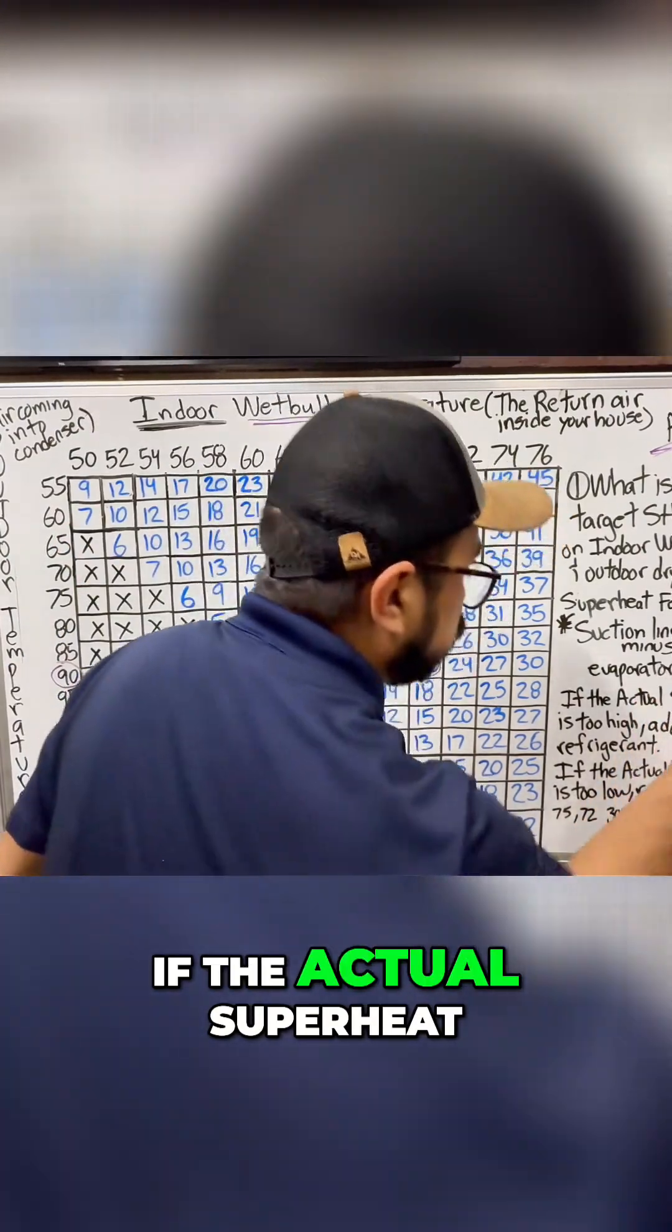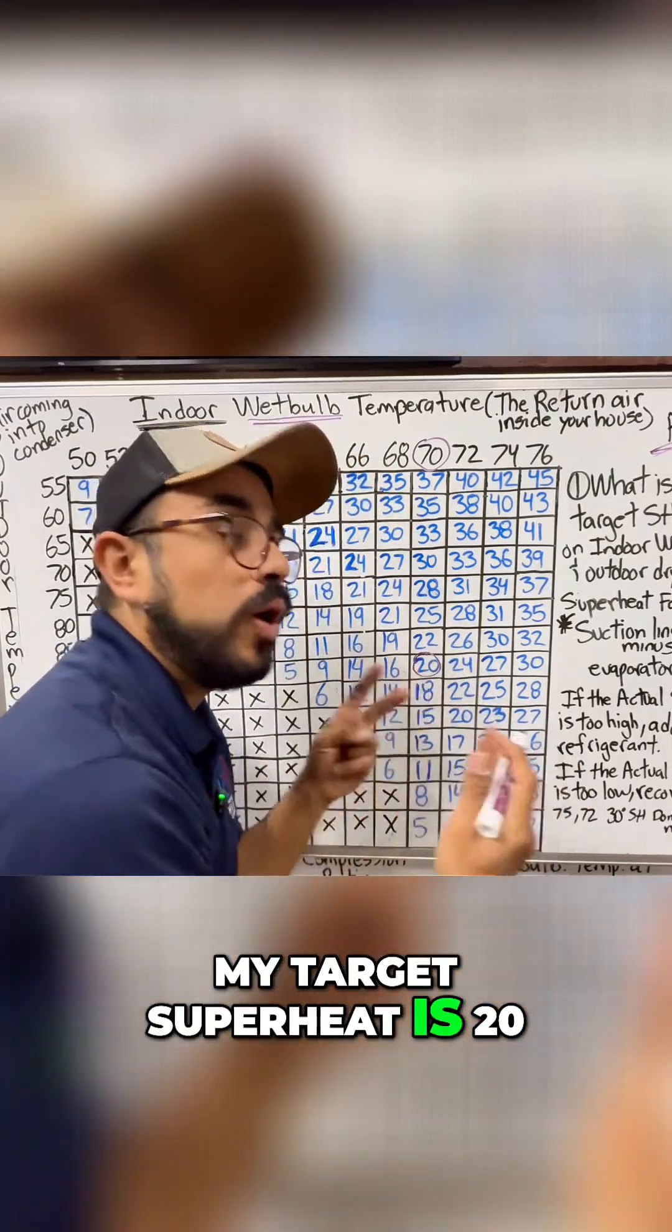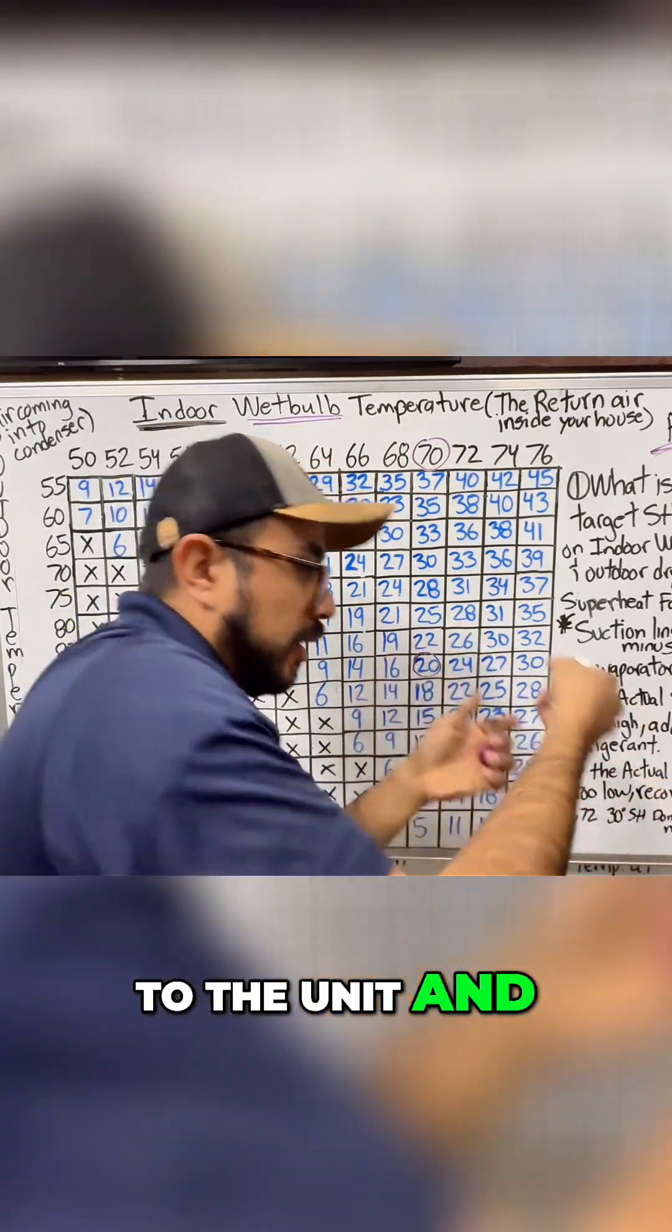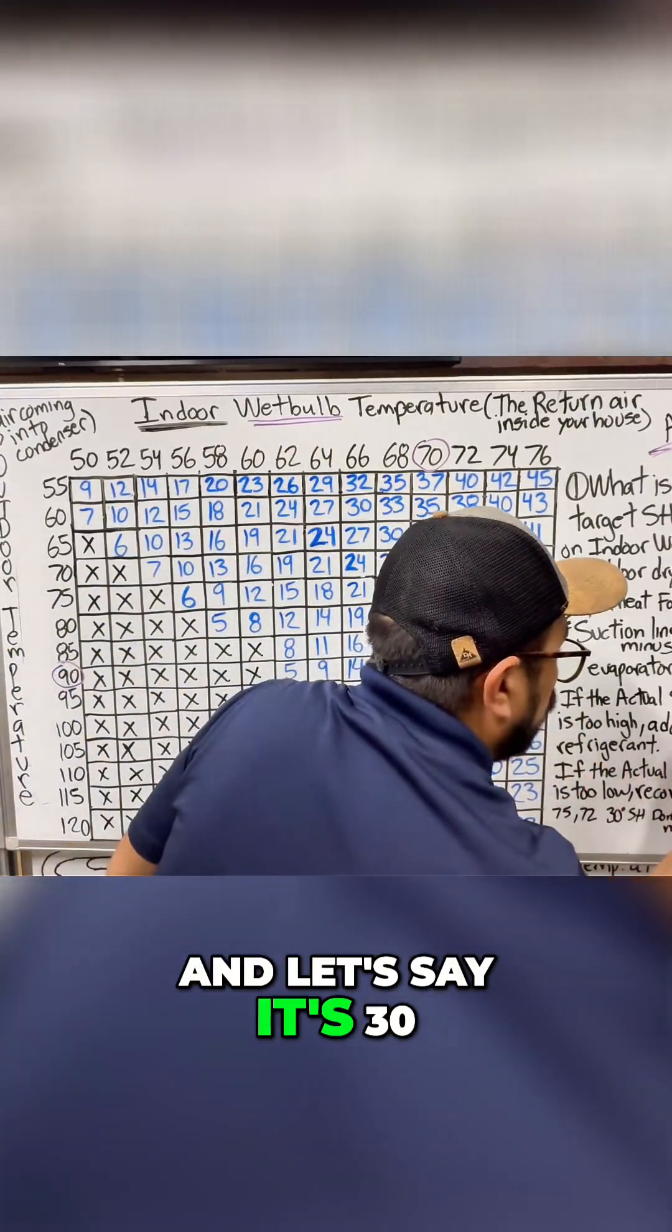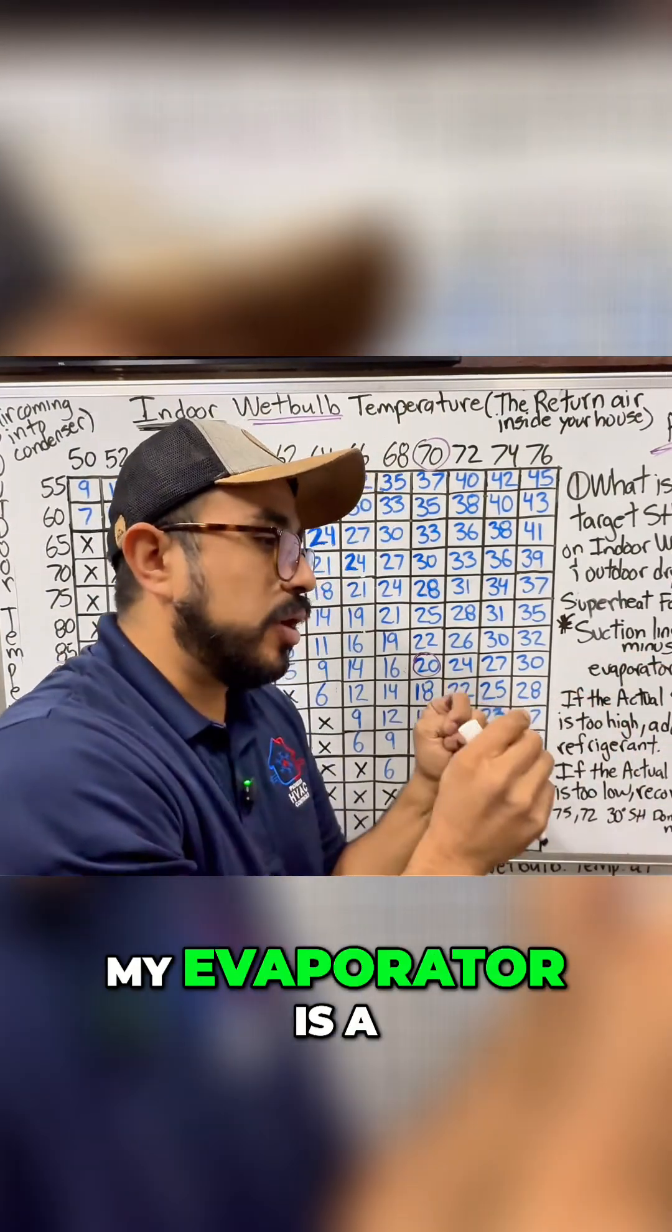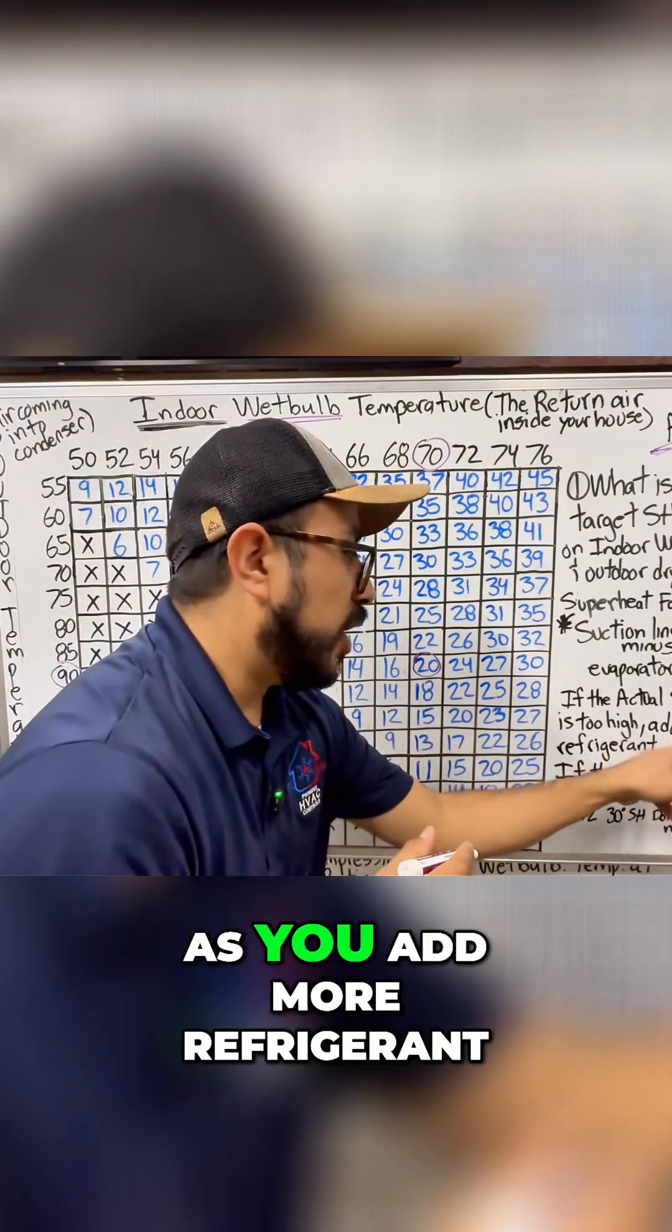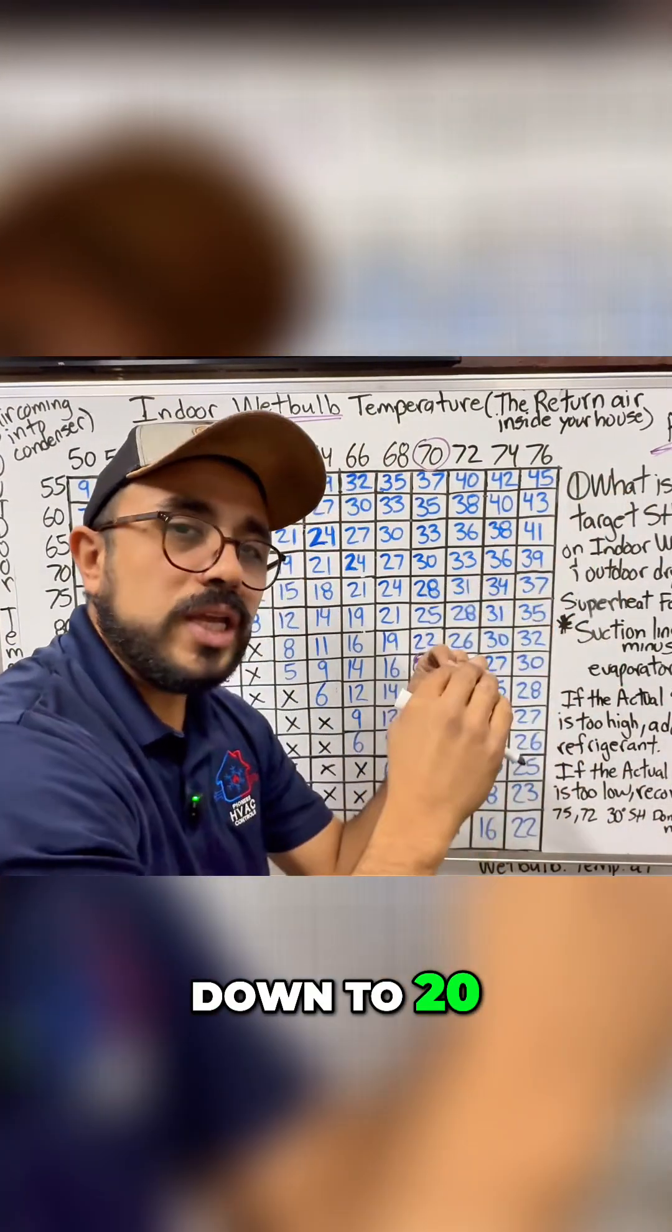If the actual superheat is too high, meaning my target superheat is 20 and when I as a technician go to the unit and clamp up and get my current superheat and it's 30, my current is telling you add refrigerant. Because right now my evaporator is a little bit flooded. Based on the conditions, I should be at 20. As you add more refrigerant, that 30 slowly goes down to 20. You have more liquid refrigerant in the evaporator.